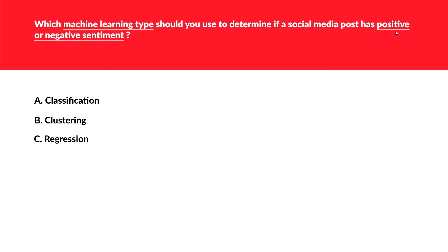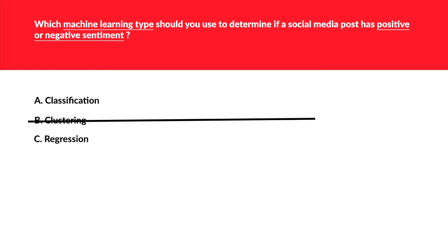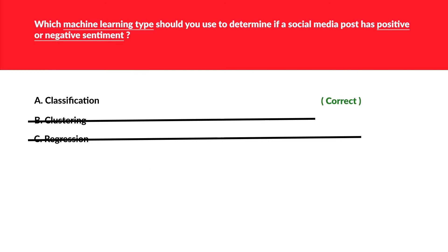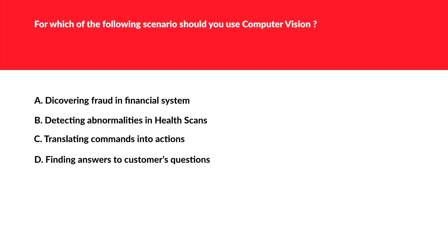This is another similar question but with the keywords 'positive or negative sentiment.' When the question asks about positive or negative, you are grouping data into categories — essentially yes or no — which is exactly what classification does. All other options are distractors. We lock in classification as the correct option.